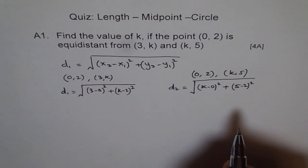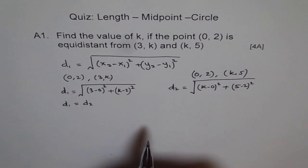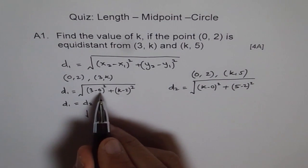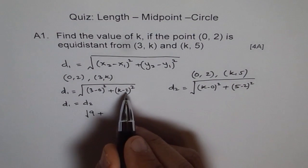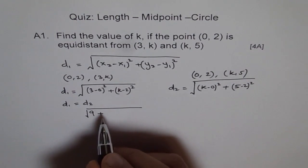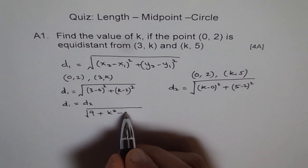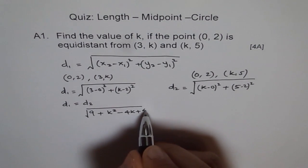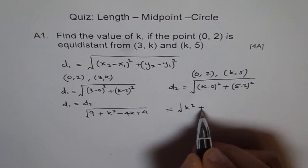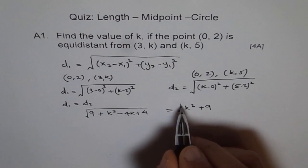Since the distances are equal, d1 is equal to d2. So we can write: square root of 3 square is 9, plus k minus 2 whole square. We can expand k minus 2 whole square: it becomes k square minus 4k plus 4. This should equal the square root of k square plus, since 5 minus 2 is 3, so 3 square is 9.